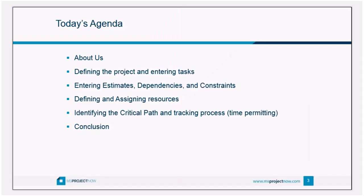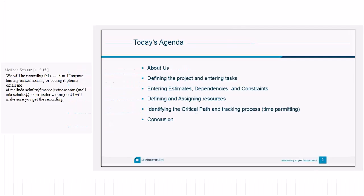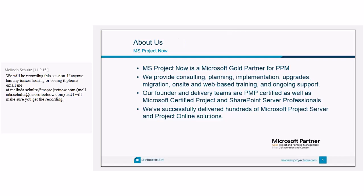Here's what I'd like to do today. We're going to take just a couple of minutes — I promise it'll be quick — to tell you about who we are and what we do. Then we're going to look at defining your project, entering tasks, entering estimates, dependencies and constraints, defining and assigning resources, and then identifying the critical path and tracking your progress.